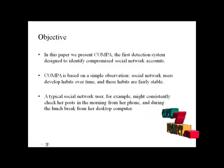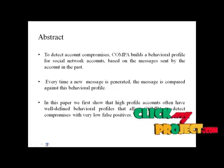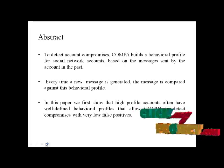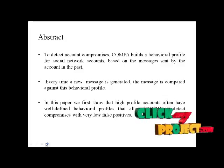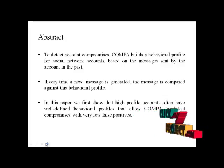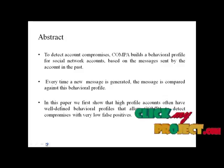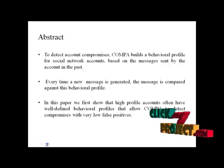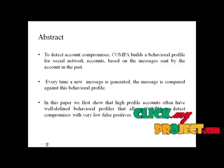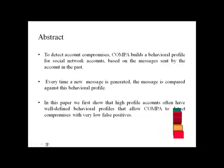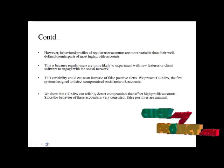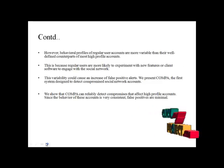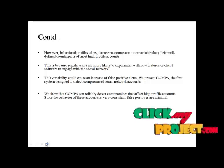To detect account compromises, COMPA builds a behavior profile for social network accounts based on messages posted by the account in the past. Every time a new message is generated, it is compared against the behavior profile. High profile accounts often have well-defined behavior profiles that allow COMPA to detect compromises with a very low false positive rate. However, behavior profiles of regular user accounts are more variable than those of high profile accounts.